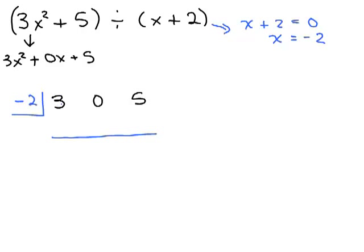You begin by taking the first coefficient and just bringing it down, always. We multiply that by what's in this little box up here. So 3 times negative 2 is negative 6, and then 0 plus negative 6 is negative 6. And then we multiply that by what's in the little box. So negative 6 times negative 2 is 12. I forgot to put my little remainder box here. And 5 plus 12 is 17. So these are the coefficients for the new quotient.